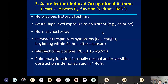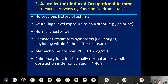Acute irritant-induced occupational asthma — Reactive Airways Dysfunction Syndrome (RADS) — involves no prior history of asthma, with an acute high-level exposure to an irritant such as chlorine, smoke, or any caustic substance. Patients develop persistent respiratory symptoms, including cough, beginning within 24 hours of accidental exposure, usually have a normal chest x-ray, and demonstrate asthma by reversibility in FEV1 or a positive methacholine test. This is typically a retrospective diagnosis.